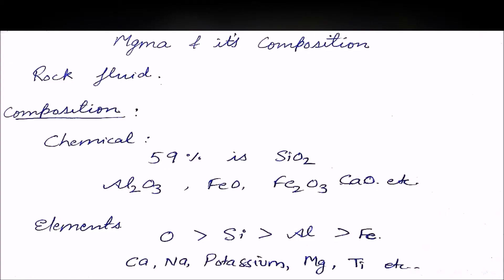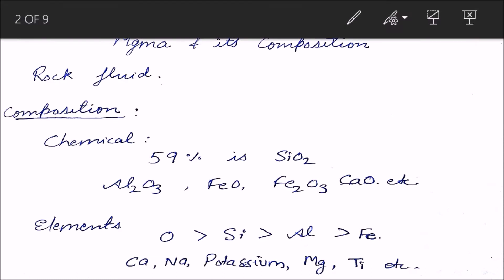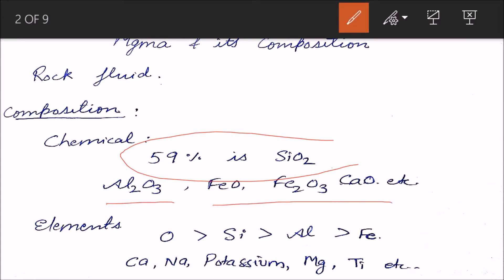What is magma? It is nothing but a rock fluid beneath the Earth's surface in a very huge amount. Its composition can be analyzed on the basis of chemical composition, where 59% is SiO₂. You have to remember this data — 59% is SiO₂. Then there is Al₂O₃, FeO, Fe₂O₃, CaO. Al₂O₃ is the second highest oxide present.